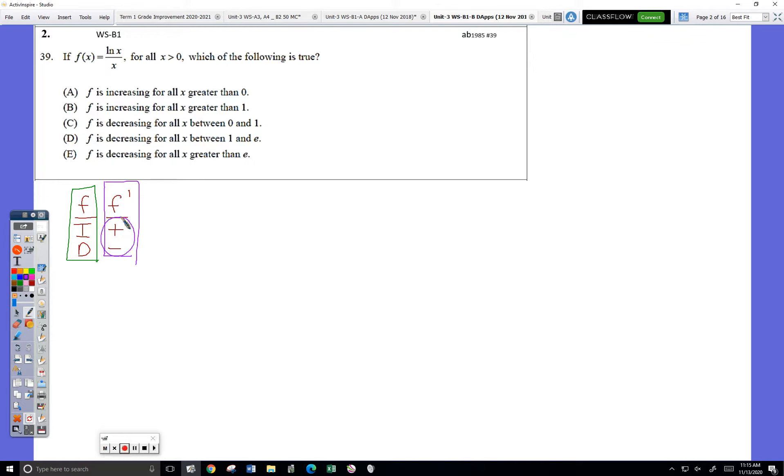The convenient thing for this homework assignment is the derivative for question 2 is exactly the same as question 1, so we get a head start. We're going to have 1 minus natural log of x divided by x squared.